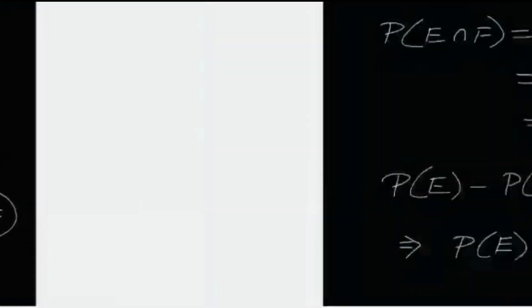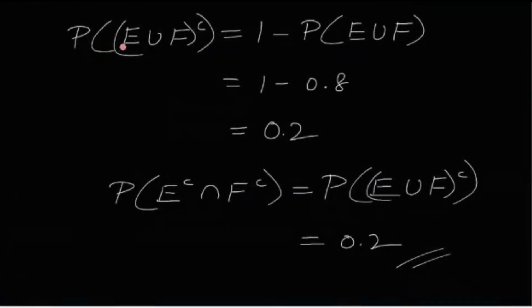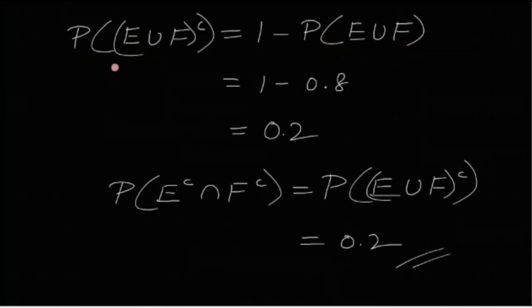For option B, we need P(E^c ∩ F^c). By De Morgan's theorem, P(E^c ∩ F^c) = P((E ∪ F)^c) = 1 − P(E ∪ F) = 1 − 0.8 = 0.2. But option B claims this equals 0.3, so option B is false. In conclusion, options A and C are true; options B and D are false.